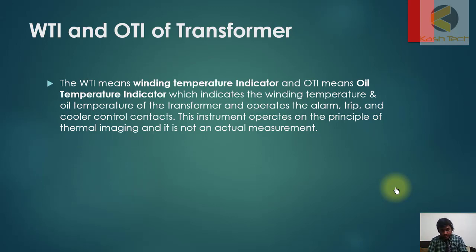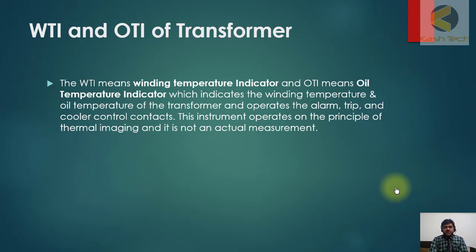There are fans installed in transformers for cooling. If temperature increases beyond a certain limit, fan group one will turn on. If temperature rises further, fan group two will turn on. At the third level, an alarm will be initiated, and at the fourth level, tripping is initiated. This is how winding temperature and oil temperature indicators work.